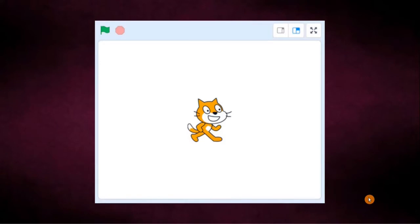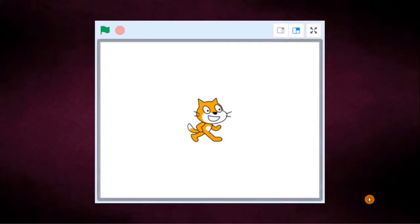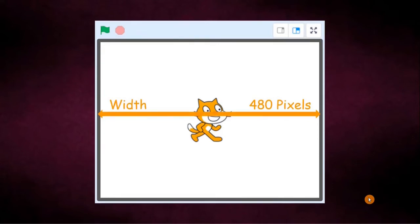So now let's learn about the range of the x y coordinates detail. So this is the stage. We know the scratch stage is a rectangular box. It has the width of 480 pixels and it has the height of 360 pixels.